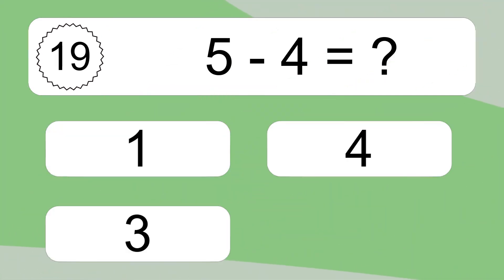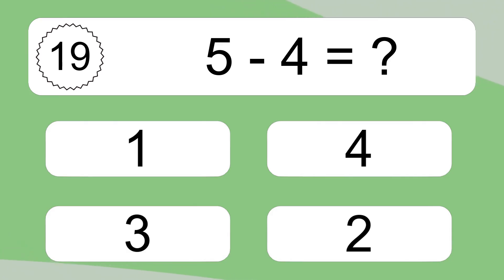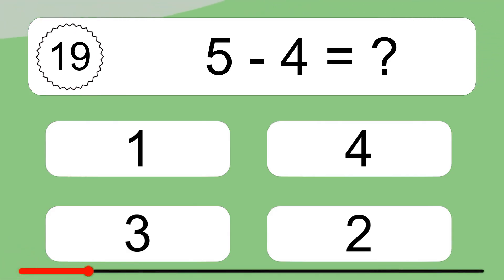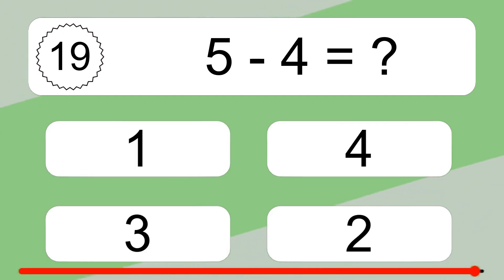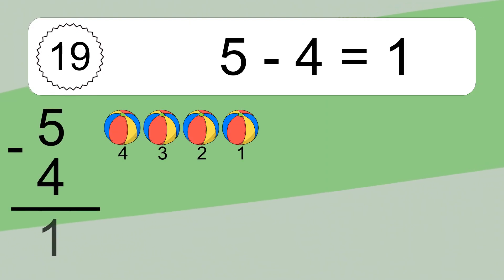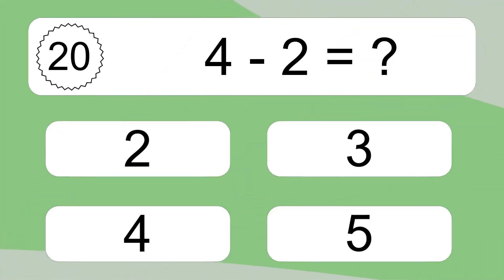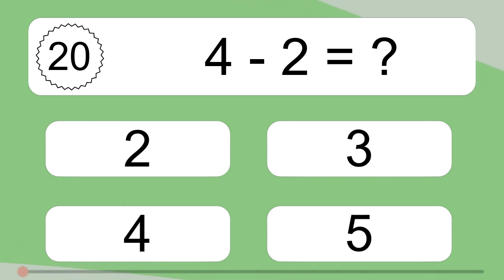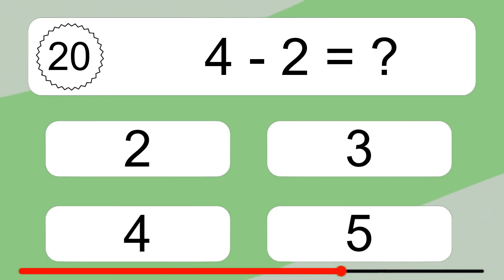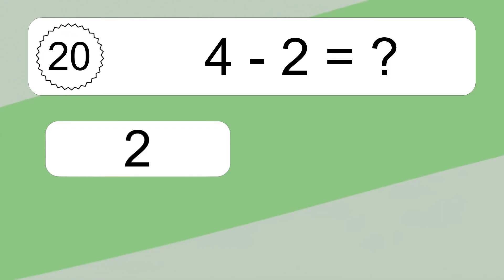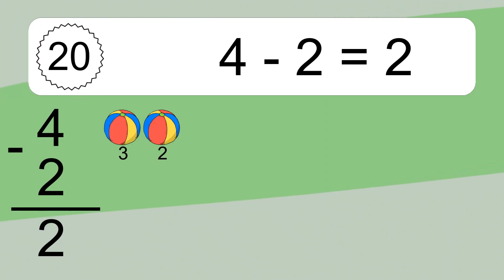5 minus 4 equals what? 5 minus 4 equals 1. Let's count it: 4, 3, 2, 1. 4 minus 2 equals what? 4 minus 2 equals 2. Let's count it: 3, 2.